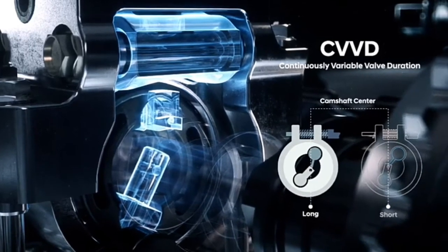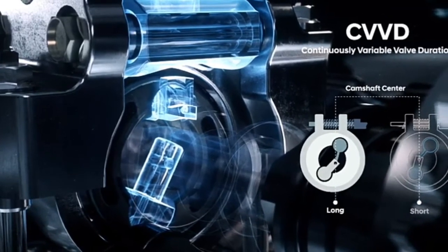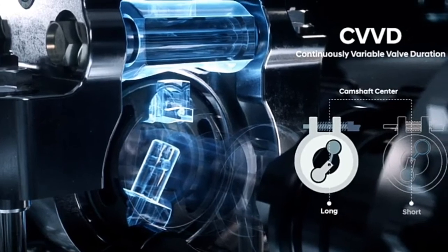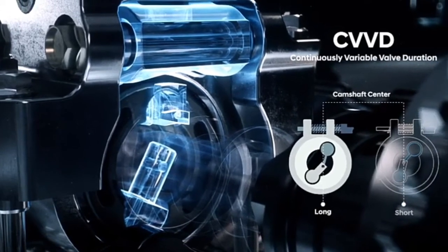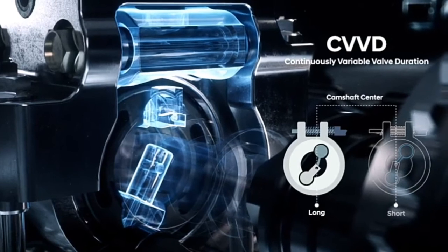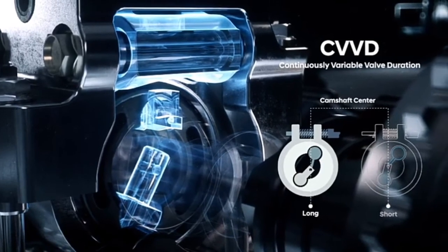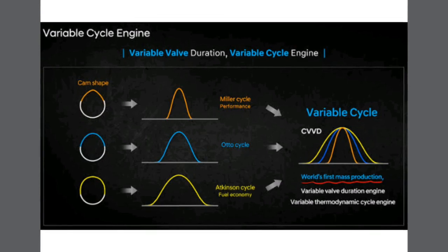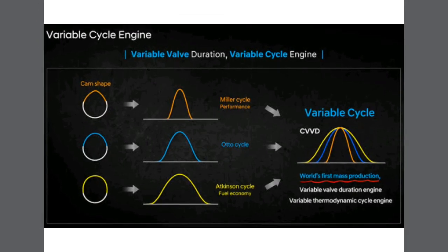In actual performance, the continuously variable valve duration helps us to make a variable cycle engine which is able to operate in Miller cycle, Otto cycle, and Atkinson cycle too.